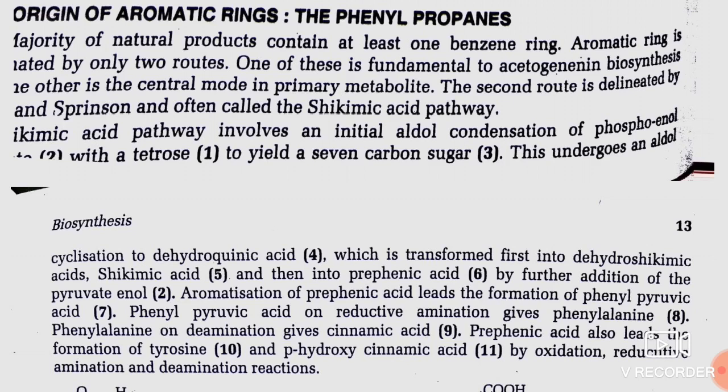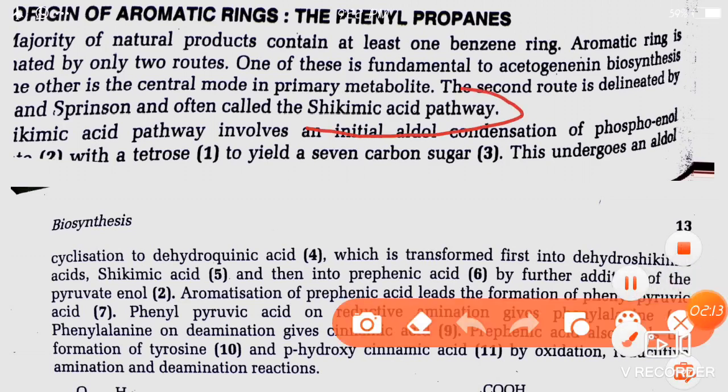Now, coming to the origin of aromatic nucleus: the majority of natural products contain at least one benzene nucleus. The aromatic ring is originated by only two routes. One of these is fundamental to acetogenin biosynthesis, and the other is the shikimic acid pathway, delineated by Davis and Spinson. This is a very important pathway.